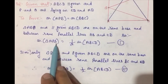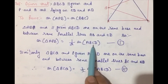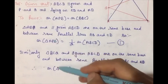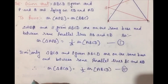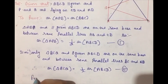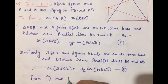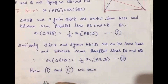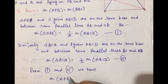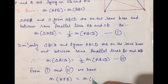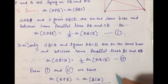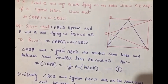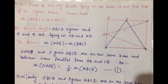अब देखिए - area of APB भी equal है area of ABCD के half के, और area of BCQ भी same equal है। जब यह दोनों इसके equal हैं तो आपस में भी equal होंगी। From first and second, we have: area of triangle APB equal to area of triangle BCQ। यही हमें proof करना था।